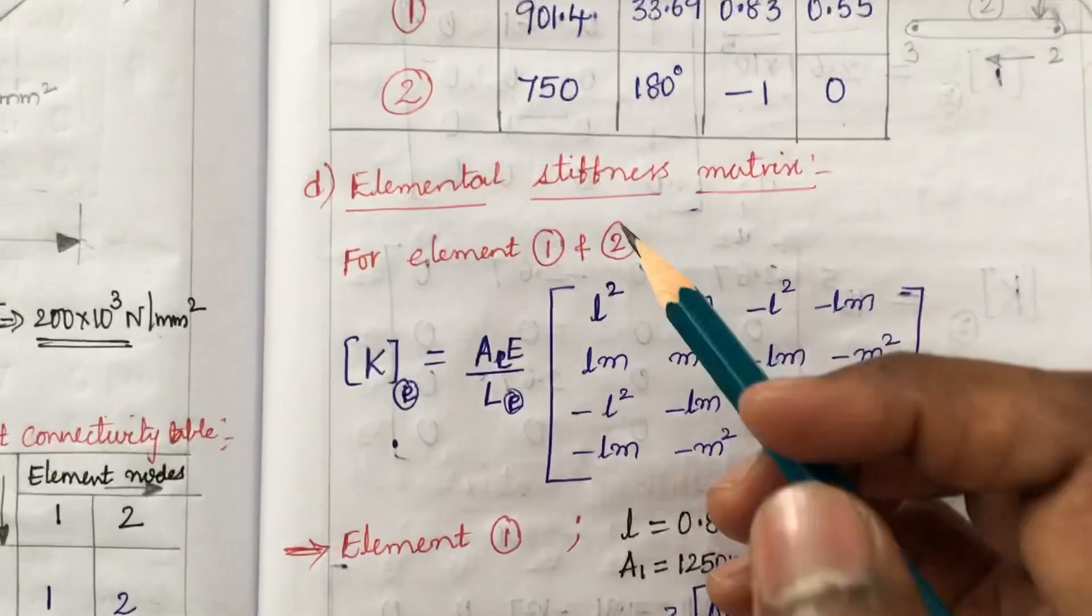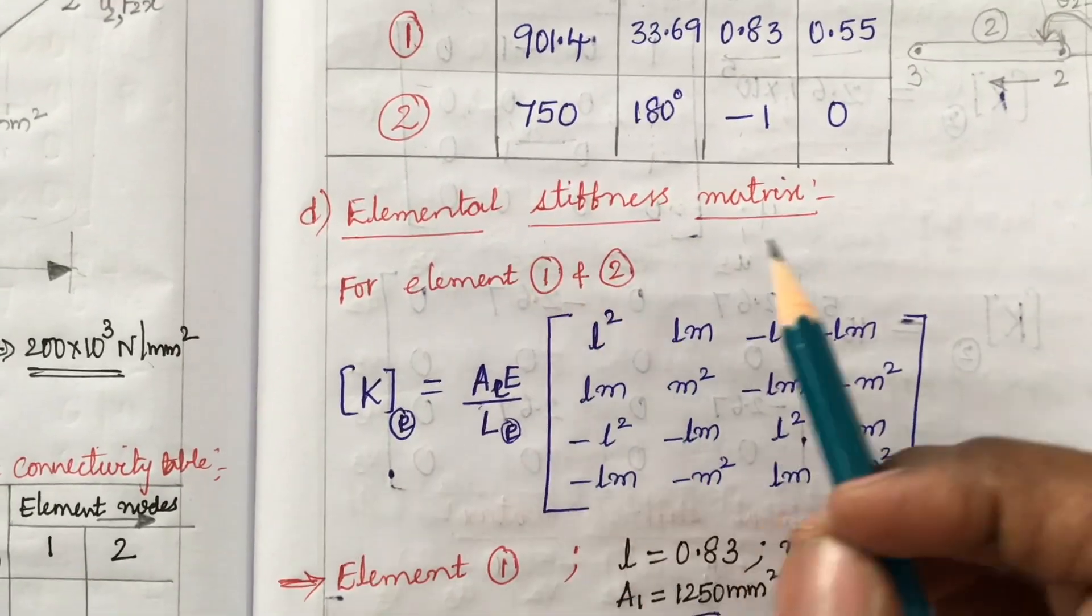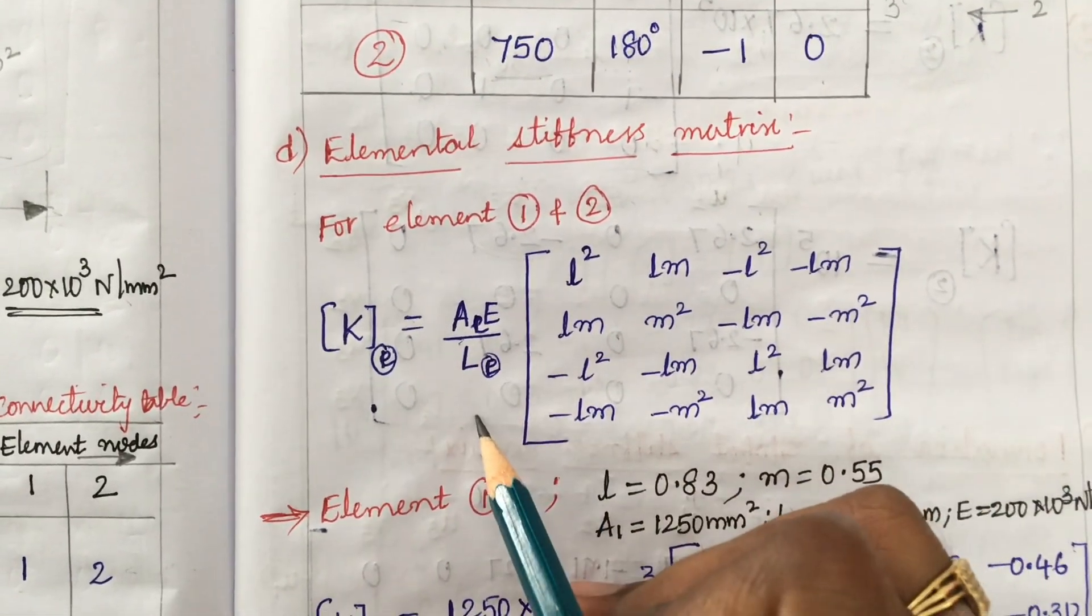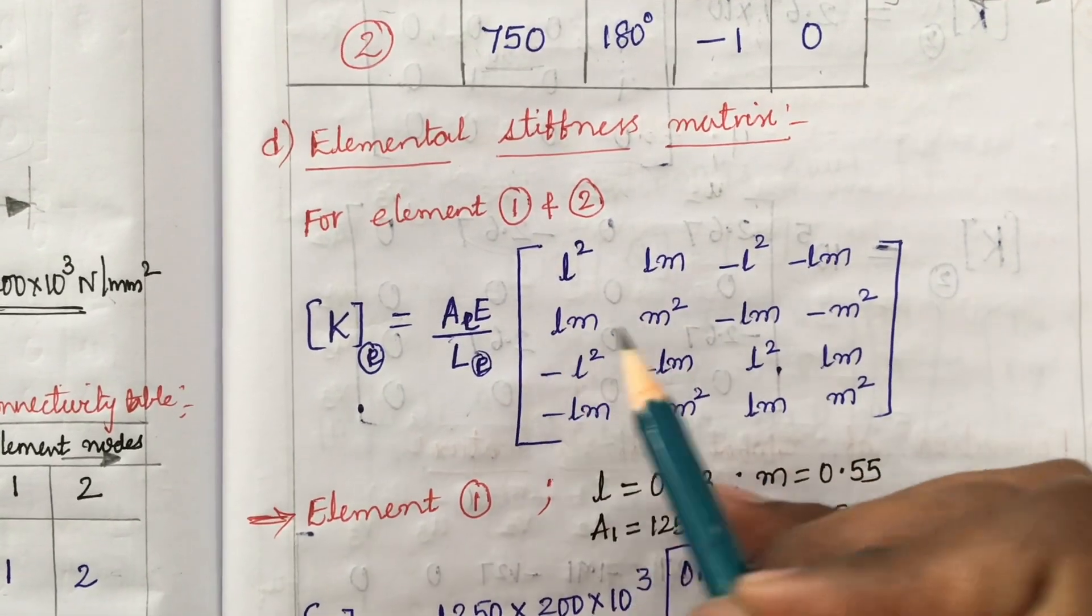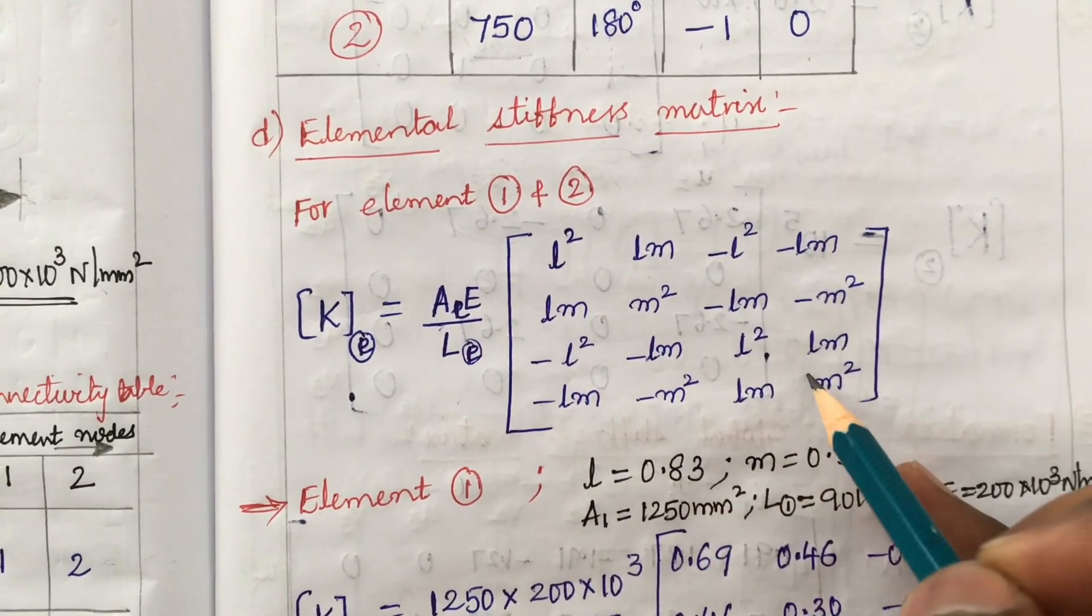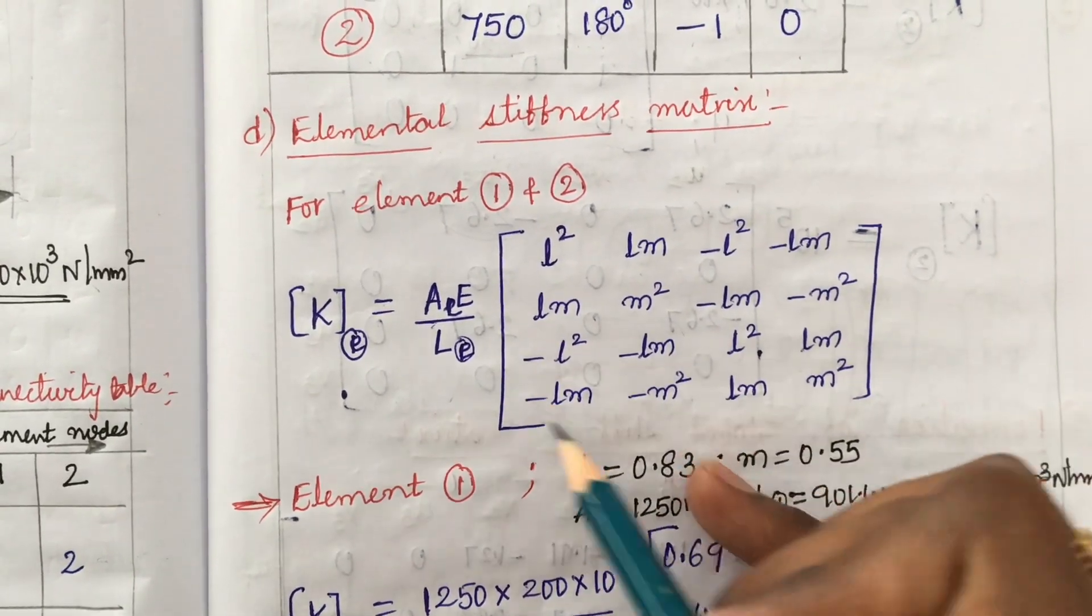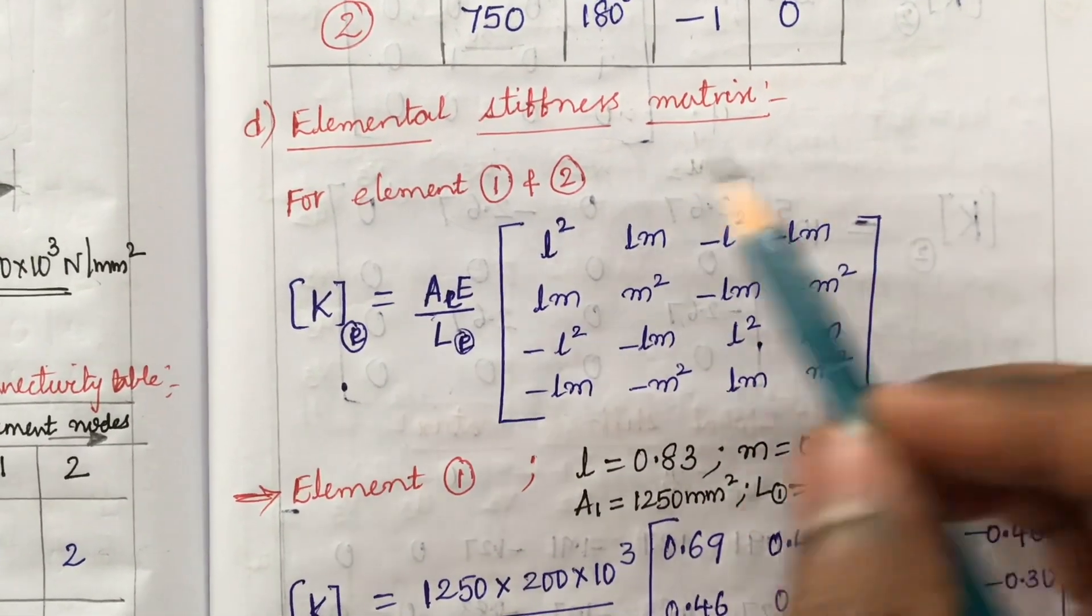Later, what you are supposed to do is elemental stiffness matrix. Elemental stiffness matrix is AE by L: L², Lm, Lm, M². Same is here, it is diagonal. It is minus L², minus Lm, minus Lm, minus M². Same is here, diagonal form.